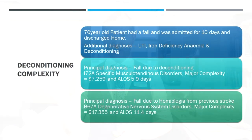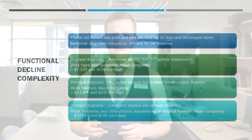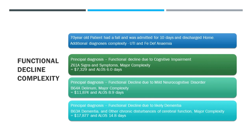For deconditioning: a 70-year-old, fall, 10 days in hospital, UTI and iron deficiency — saying 'fall due to deconditioning' generates around $7,000. Saying 'fall due to hemiplegia from previous stroke' goes up to $17,000, which is more reflective of the time and services provided. For functional decline: 'cognitive impairment' gets $7,000; 'functional decline due to mild neurocognitive disorder' gets nearly $12,000; 'functional decline due to likely dementia' gets $17,800. These differences make a significant impact.